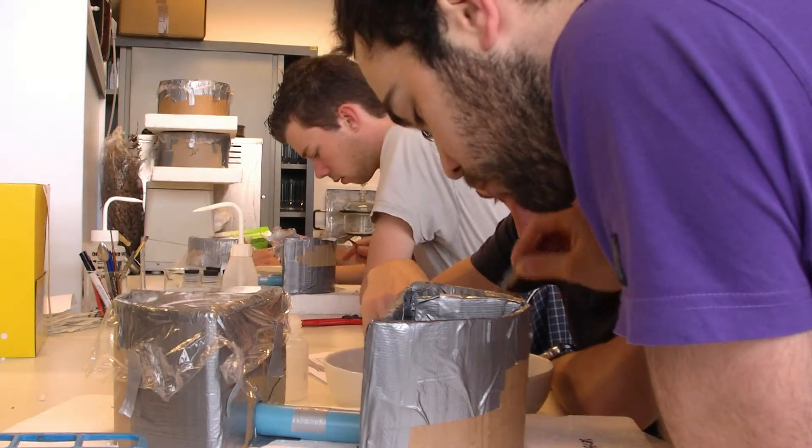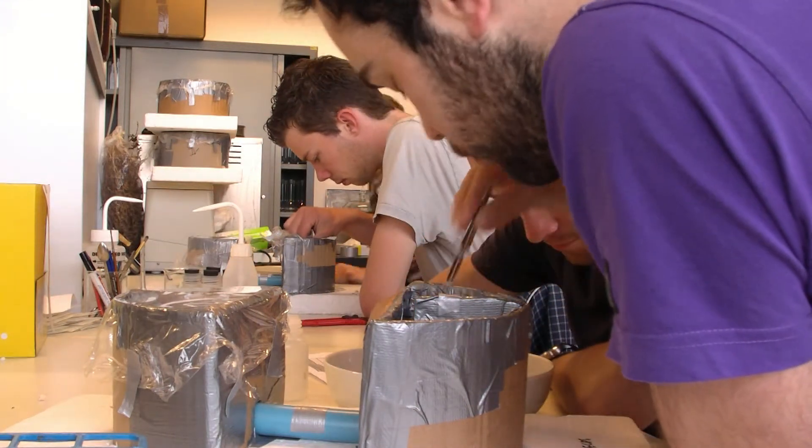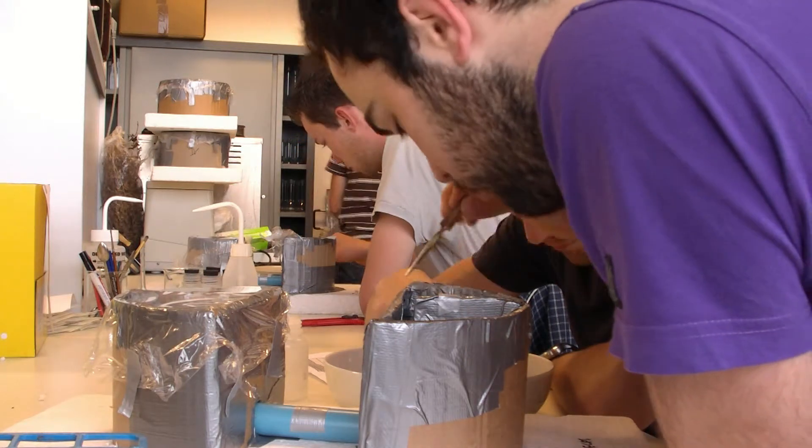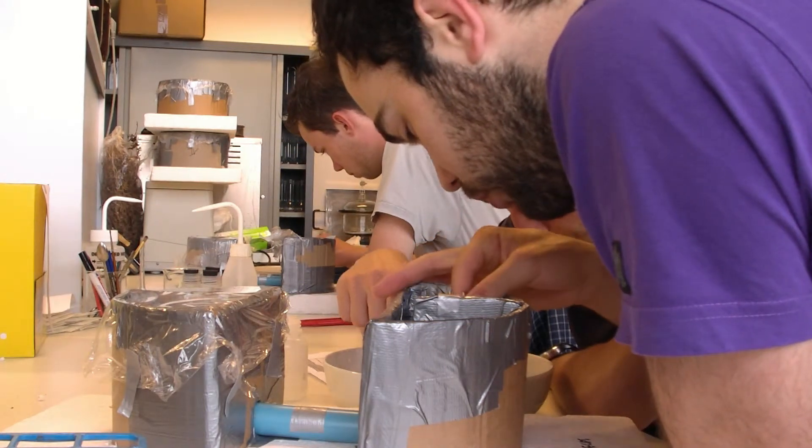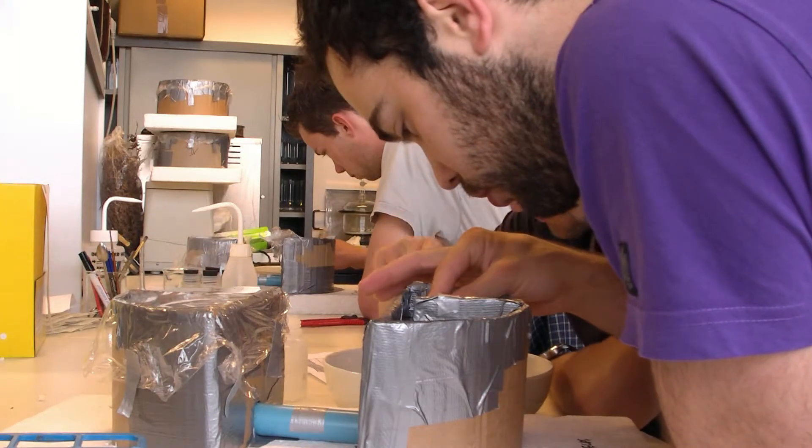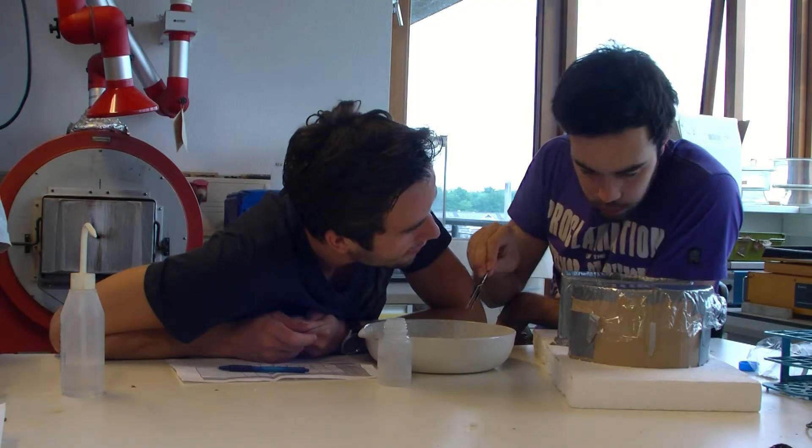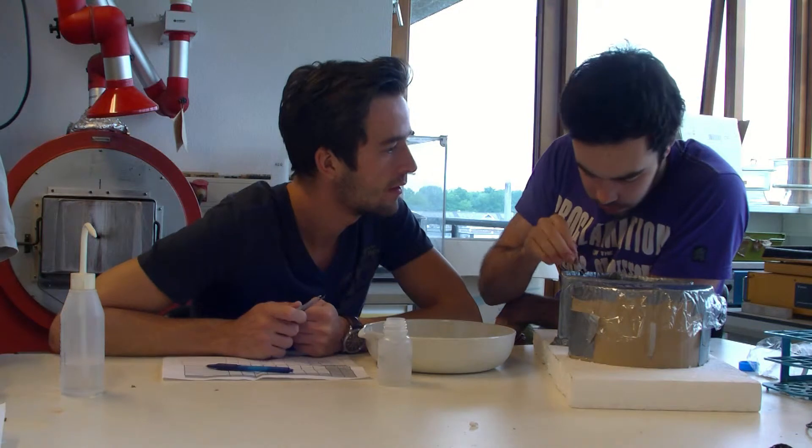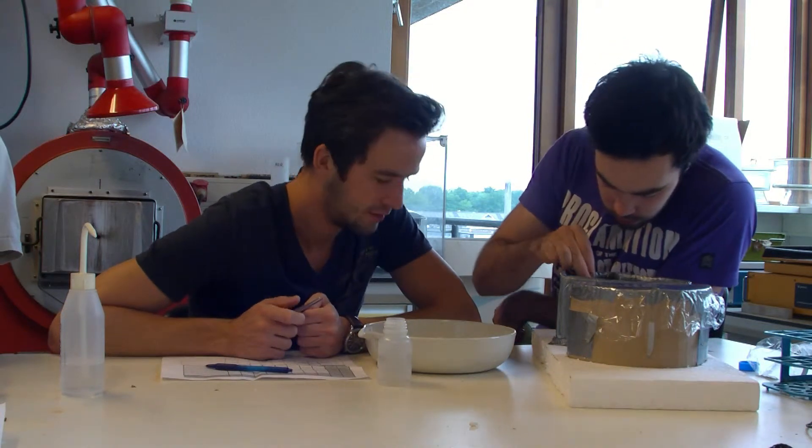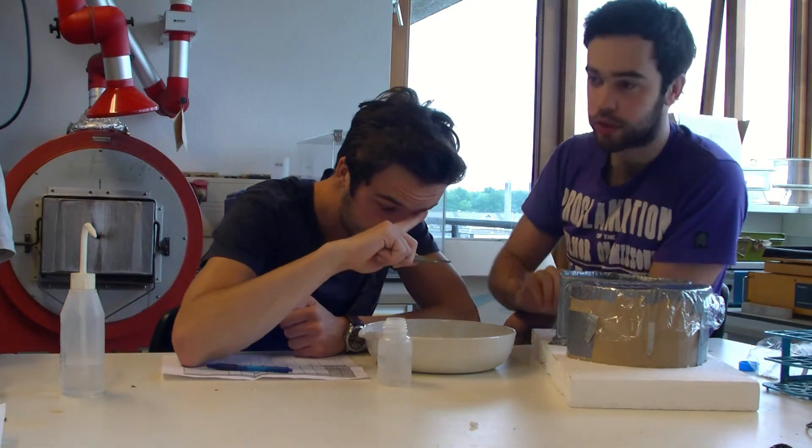Before we started each experiment, the collected ticks from the correlated field study were able to acclimate to the lab conditions from 3 to 5 pm. For each experiment, 20 ticks were taken randomly and released into the boxes at 5 pm. This means that in total 80 ticks were used per experimental round.